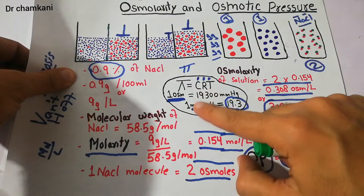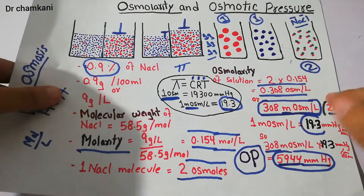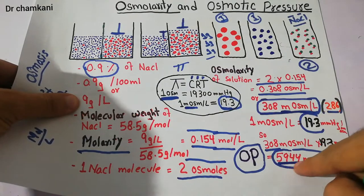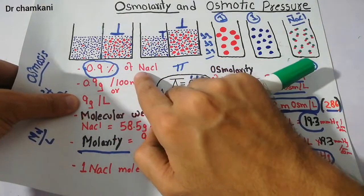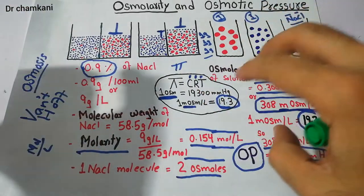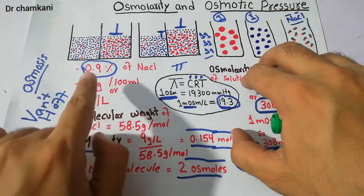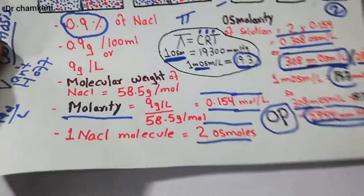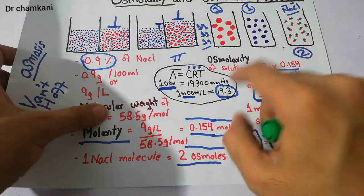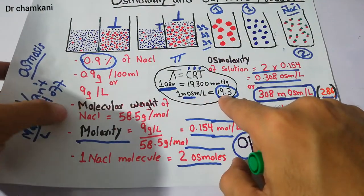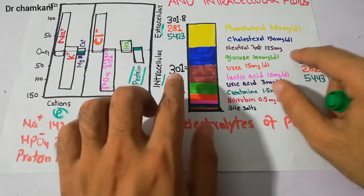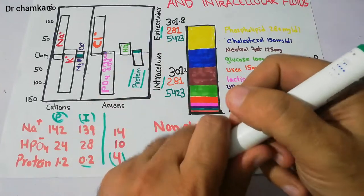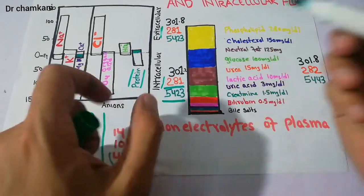We know that the osmotic pressure of 1 milliosmol is 19.3 mmHg. So the osmotic pressure of 308 milliosmoles will be 19.3 × 308 = 5944, and that was for 0.9% saline. We also discussed how to calculate the molarity and osmolarity for a 0.9% saline solution previously. Therefore, the osmotic pressure of the intracellular compartment will be 281 × 19.3 = 5423 mmHg.